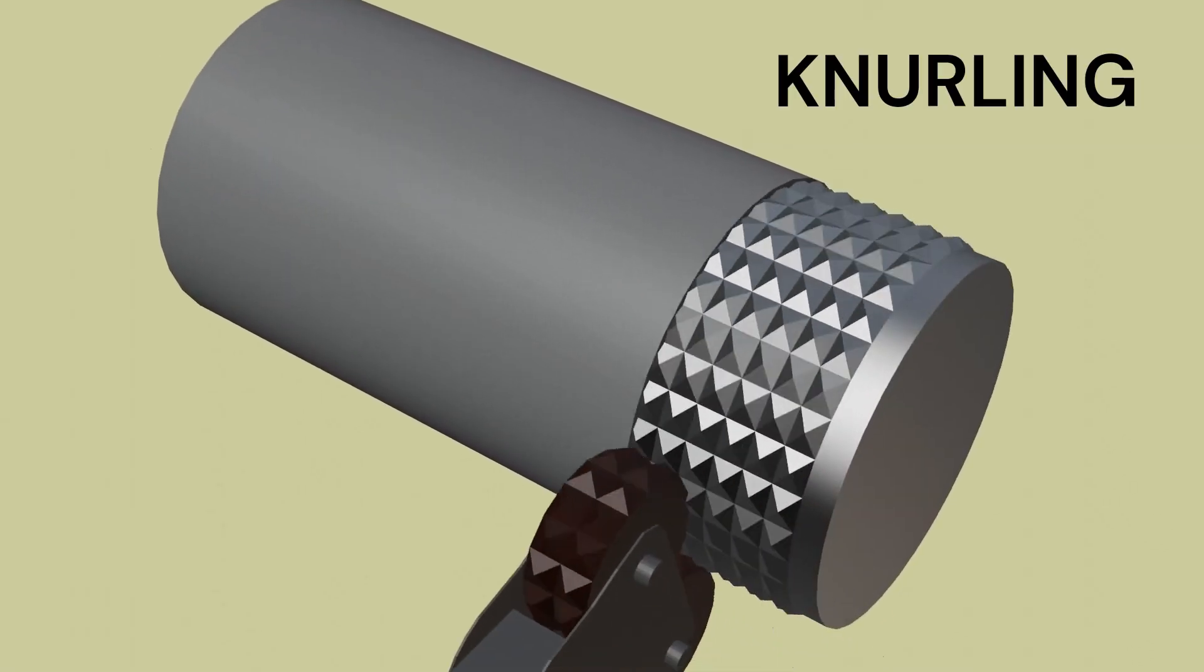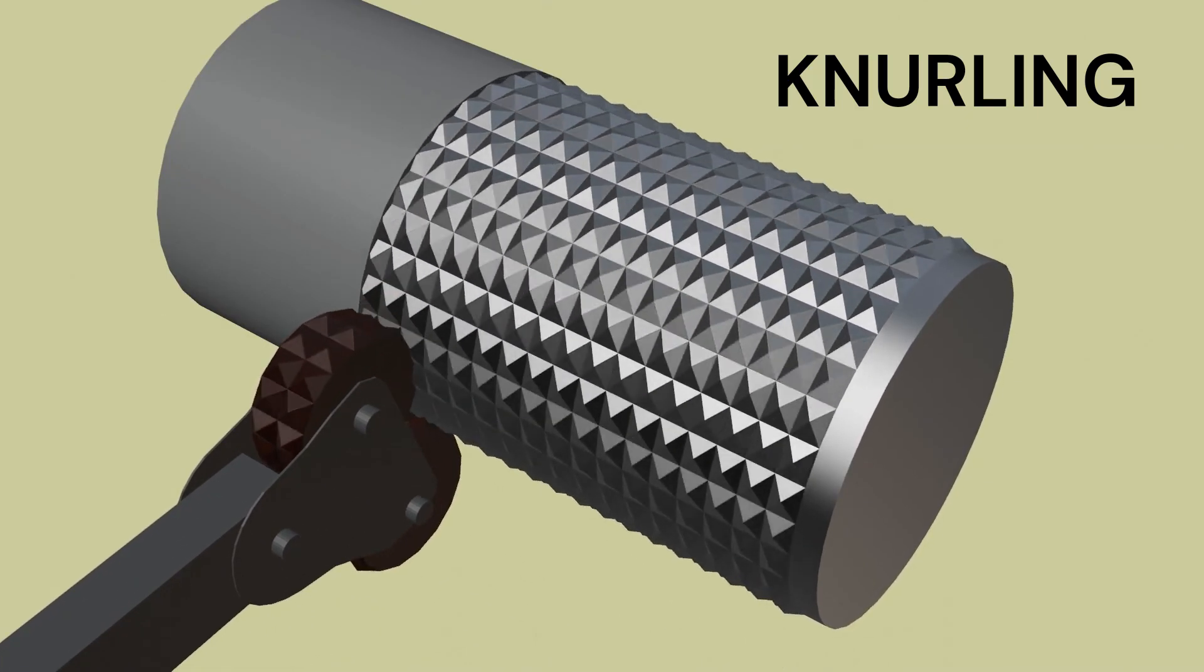Knurling is a manufacturing process that deforms a workpiece to achieve a rough pattern surface.